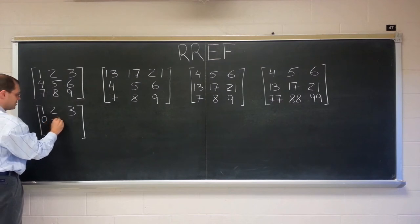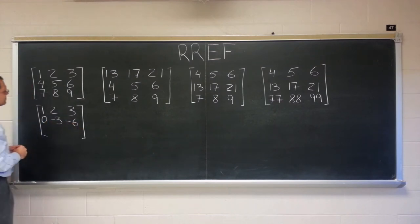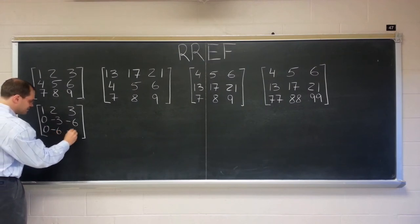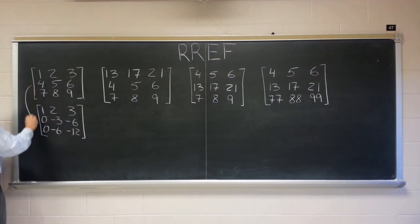minus three, minus six, and subtracting seven of the first row from the last row, leaves us zero, minus six, minus twelve. So that's our first step.